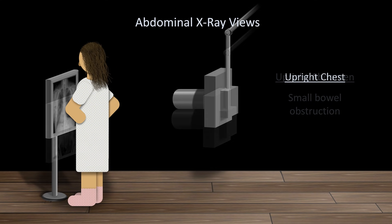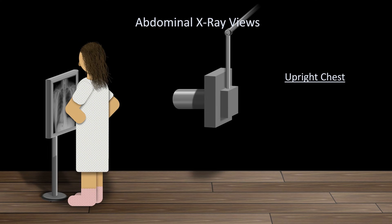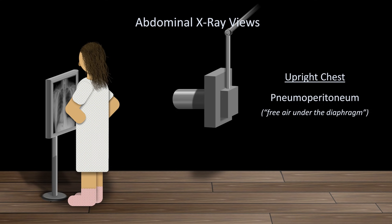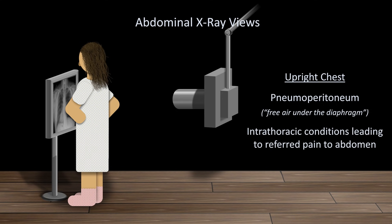Then there is the upright chest view, which as shown is also a PA view. An upright chest is the best view for identifying pneumoperitoneum, often referred to as free air under the diaphragm. This just shows up better on the upright chest film because of a better view of the diaphragms. A chest film will also help to assess for intrathoracic conditions which could lead to referred pain to the abdomen, such as a lower lobe pneumonia. For patients who are unable to stand, a left lateral decubitus film — in which a patient is lying down on their left side — is the preferred view to identify pneumoperitoneum.